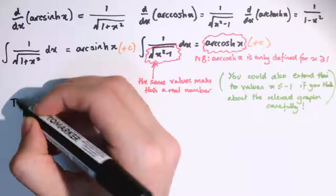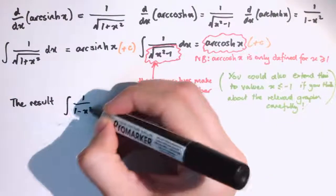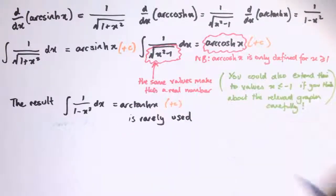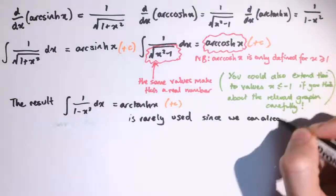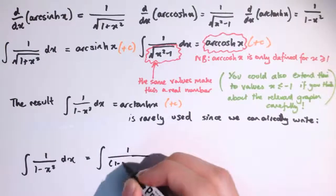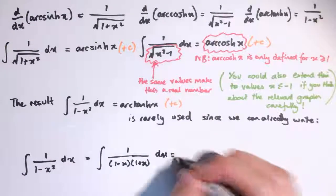The third result we get, the integral of 1 over 1 minus x squared dx equals arc tanh x, is rarely used, because we can already write the integral 1 divided by 1 minus x squared dx as 1 over 1 minus x times 1 plus x, using the difference of two squares, and then express this in partial fractions.